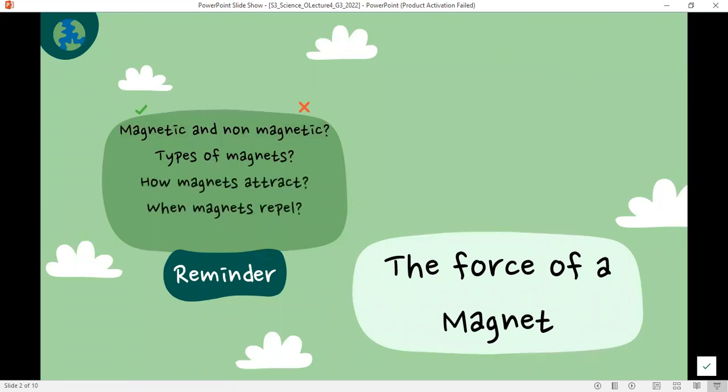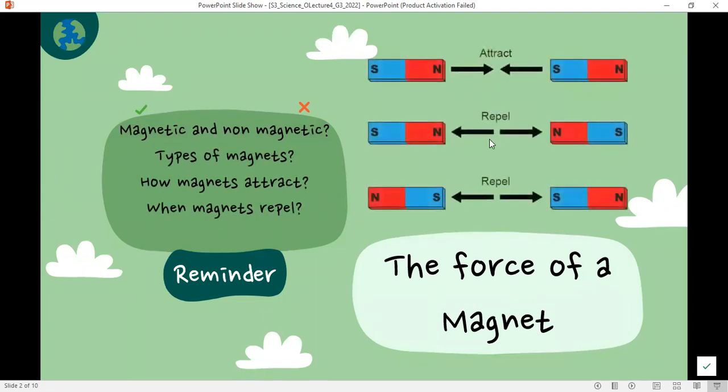Those magnets, when you place them next to each other, they attract or they repel. This depends on the poles you are placing next to each other. So when you place a south pole, for example, next to the north pole of another magnet, they attract since they are different poles. Different poles attract, while same poles, north and north or south next to south, those magnets repel.